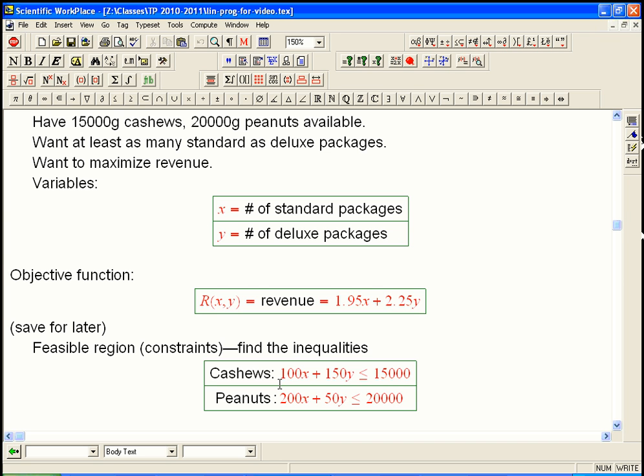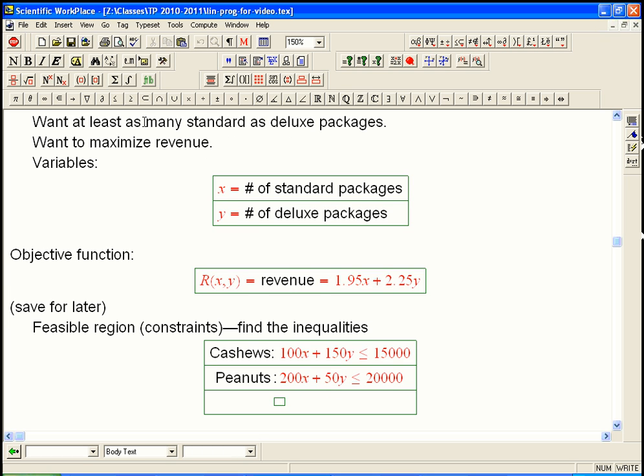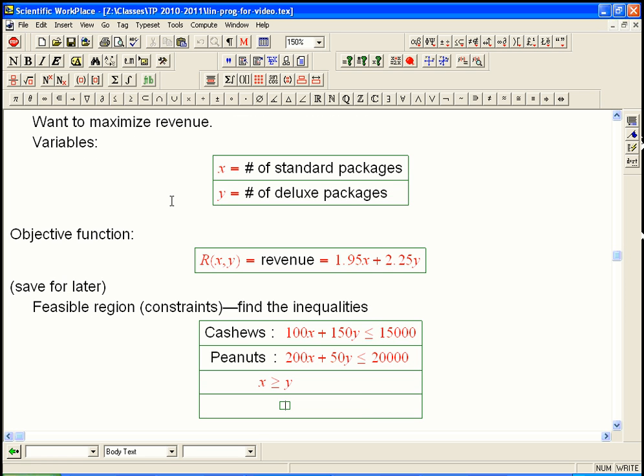Plus the deluxe has 50 grams of peanuts times y. And that's less than or equal to 20,000. So this is really the heart of the problem. For each constrained quantity, each limited quantity, we're writing down an inequality. And there's really three pieces. There's how many cashews are we going to need based on x standard? How many cashews based on y deluxe? Add them together and they should be less than or equal to the actual total available number of cashews.